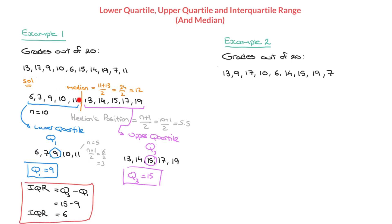We've found the median, lower quartile, upper quartile, and interquartile range for this first list of data, which had an even number of values — n was equal to 10. Let's now work through example 2 to see what it looks like with an odd number of values. The setup is the same: a list of grades out of 20. Rewriting them in increasing order gives 6, 7, 9, 10, 13, 14, 15, 17, and 19 — nine values, so n equals 9. To find the quartiles, the first thing is to find the median's position.